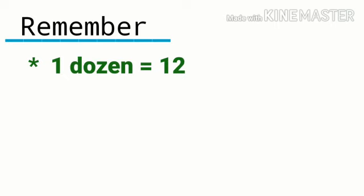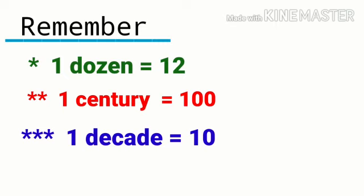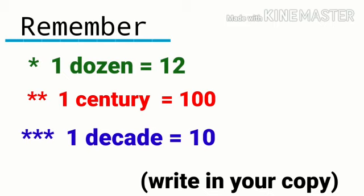Now some things to remember: One dozen equals 12, one century is equal to 100, and one decade is equal to 10. All these things you will write in your copy and learn and remember them.